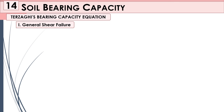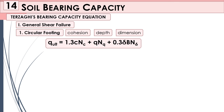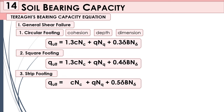It's easier to just memorize the rectangular footing formula. For your circular footing you have: 1.3cNc + qNq + 0.3γBNγ. For your square footing you have: 1.3cNc + qNq + 0.4γBNγ.